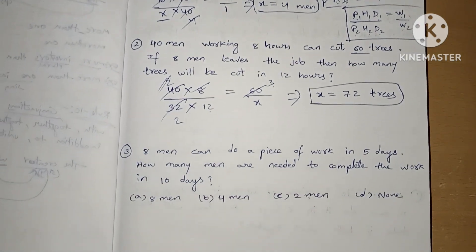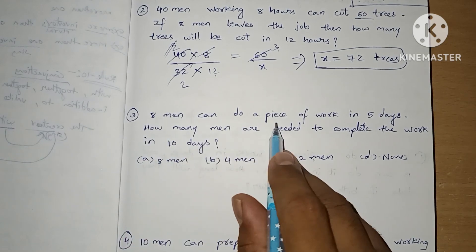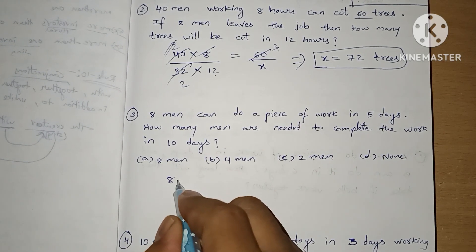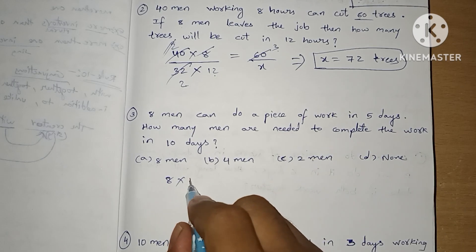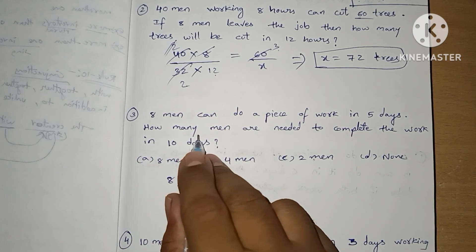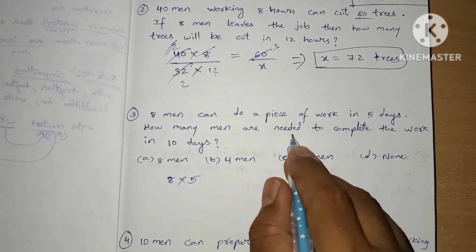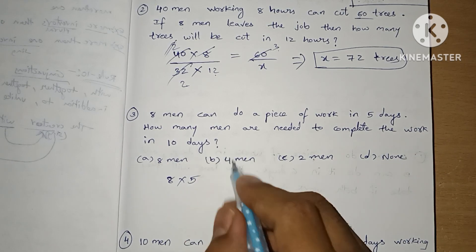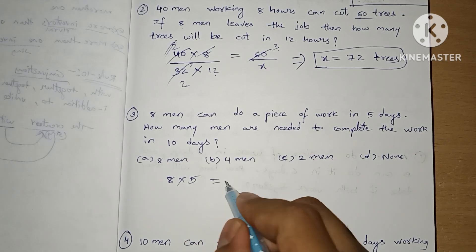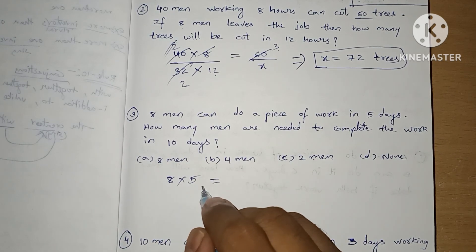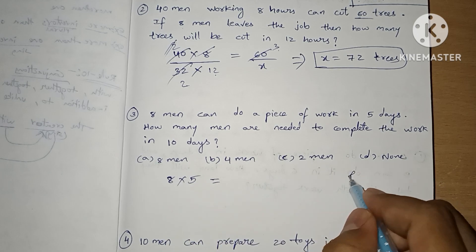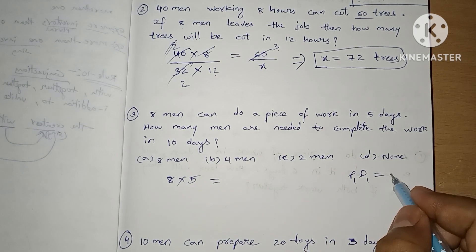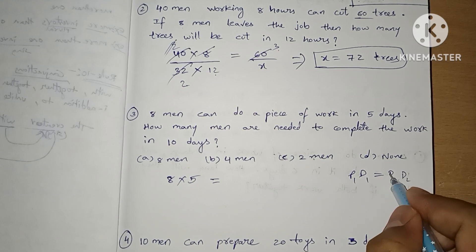Now let's see the third question. 8 men can do a piece of work in 5 days. In how many men are needed to complete the work in 10 days? The work must be the same. So we write: persons × days = P1 × D1 = P2 × D2.